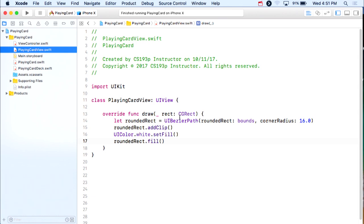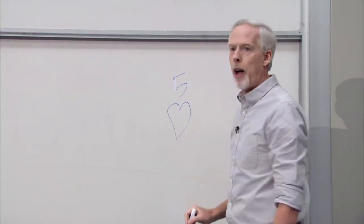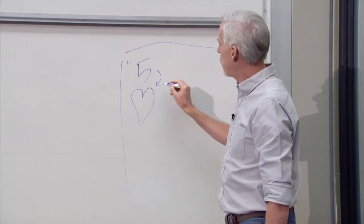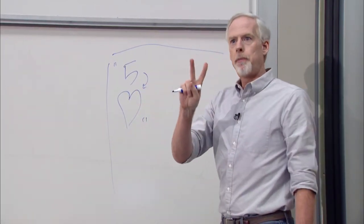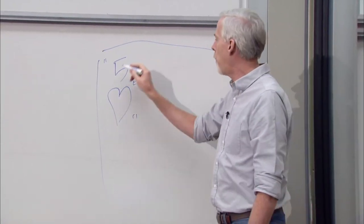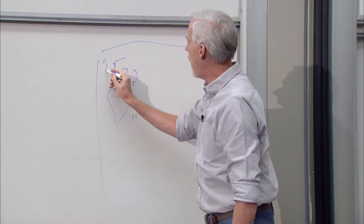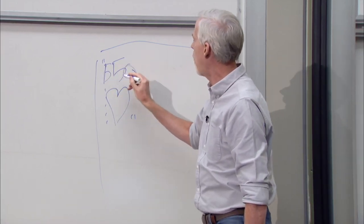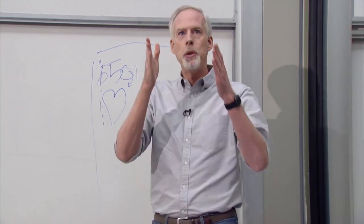I'm going to create a UILabel that uses an attributed string as its text. For a five of hearts, the corner looks like: 5 (carriage return) ♥. I need two attributes on this attributed string: the font size — I want the font to be big if my card is big, small if the card is small — and centering, because I want the five centered over the heart. I might have a ten of hearts where '10' is actually wider than the heart, so I want these two things centered.